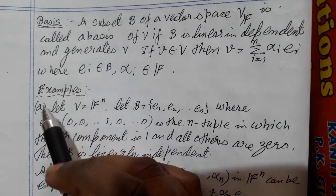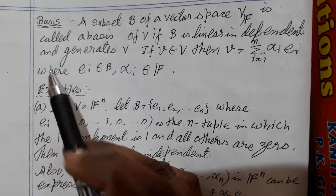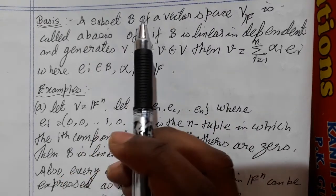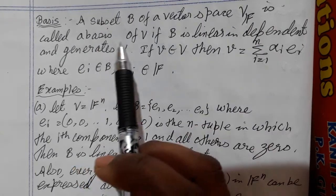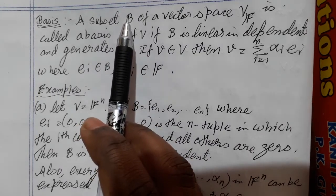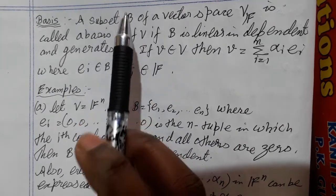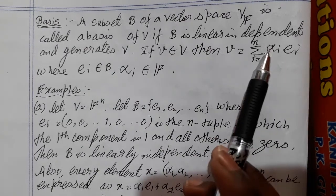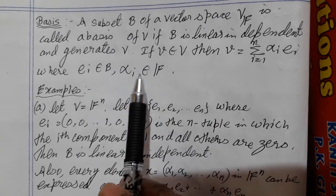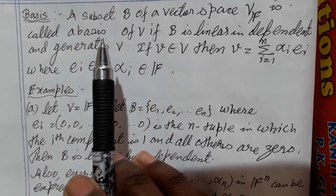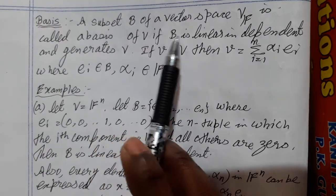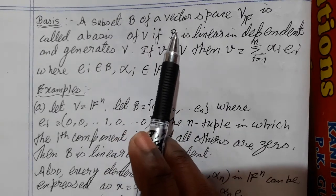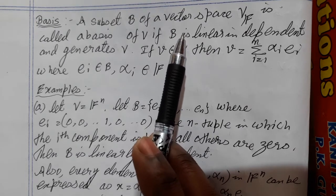Here we are going to learn about the definition of basis. So what is a basis? A subset B of a vector space V over the field F is called a basis of V if this set is linearly independent and every element of V can be written as a linear combination of the elements of B, where the elements belong to B and the scalars alpha_i belong to the field.